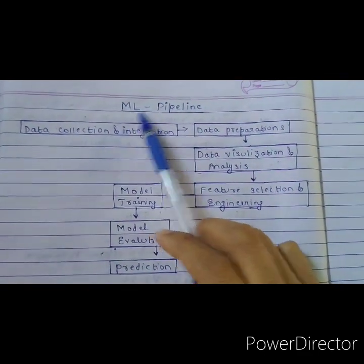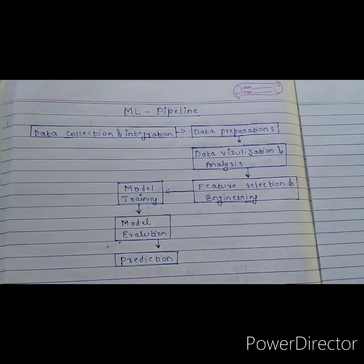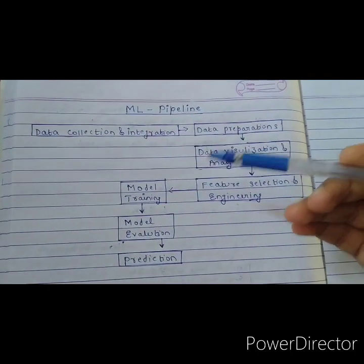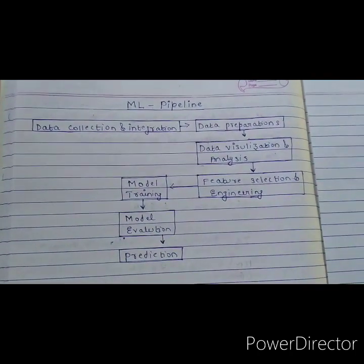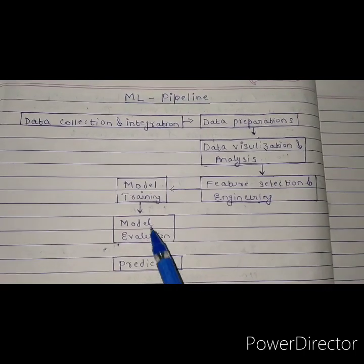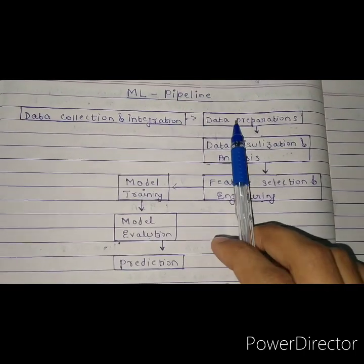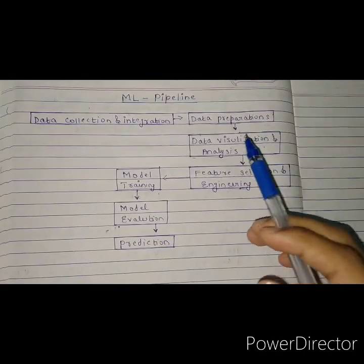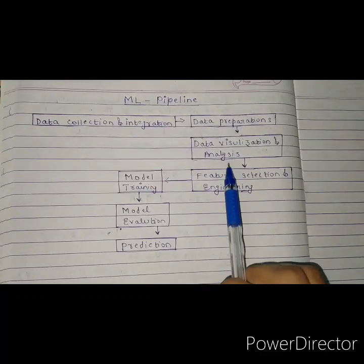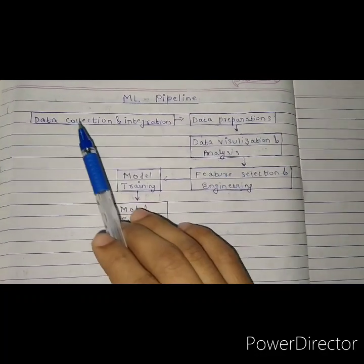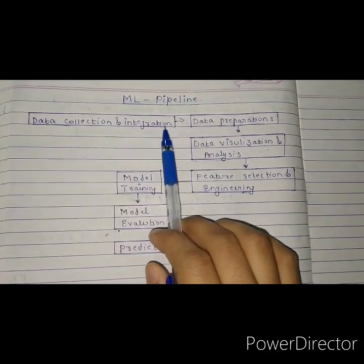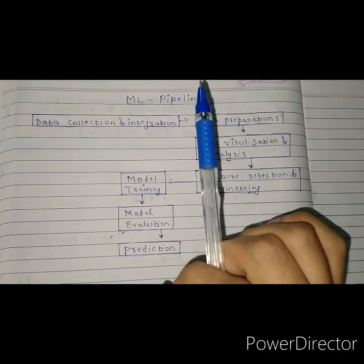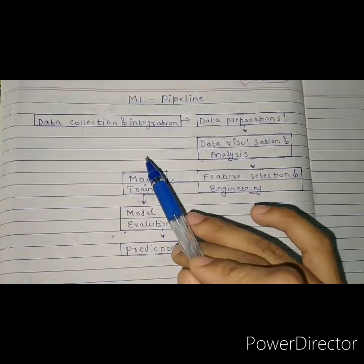Here is the machine learning pipeline — a series of steps. There is a machine learning problem, and these are the steps to address it. The first step is data collection and integration, which is the most important thing.